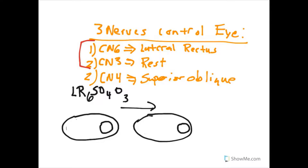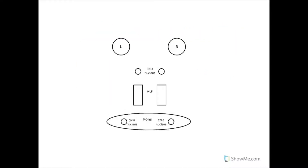Now we're going to focus on the pathway itself — how do the nerves move through the brain to ensure this happens? This drawing will be available as a Dropbox link in the description. At the front I have the left and right eye. Then I have the CN3 nucleus, the MLF (medial longitudinal fasciculus), and then the pons containing the CN6 nucleus — that's the abducens nerve nucleus. I'm going to use yellow for the neurons.